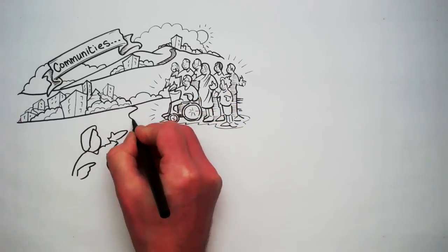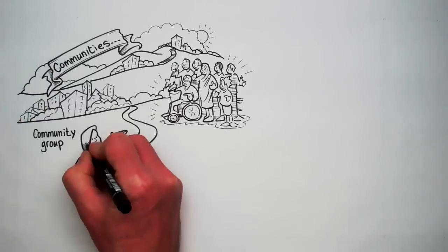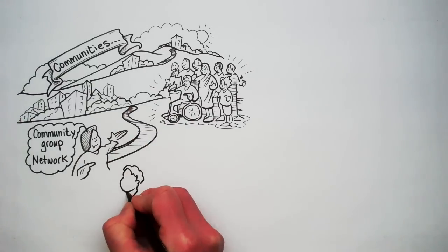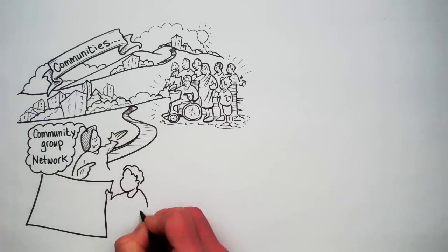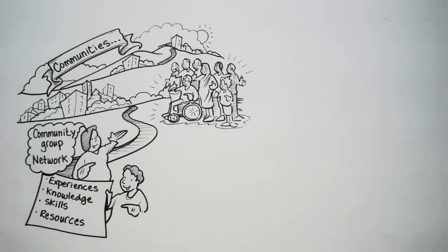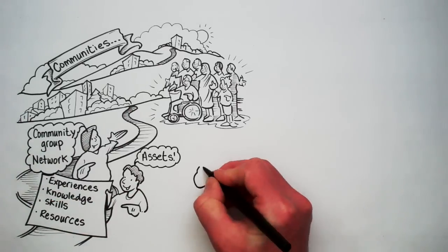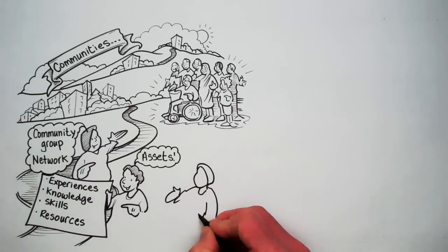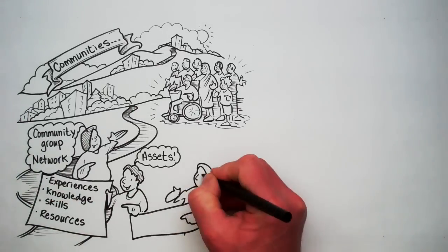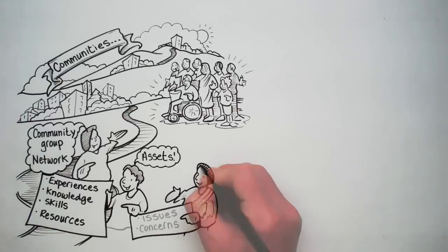When people come together to form a community group or network, they bring with them a wide range of experiences, knowledge, skills and resources — sometimes known as assets — which help them to address their shared issues and concerns.